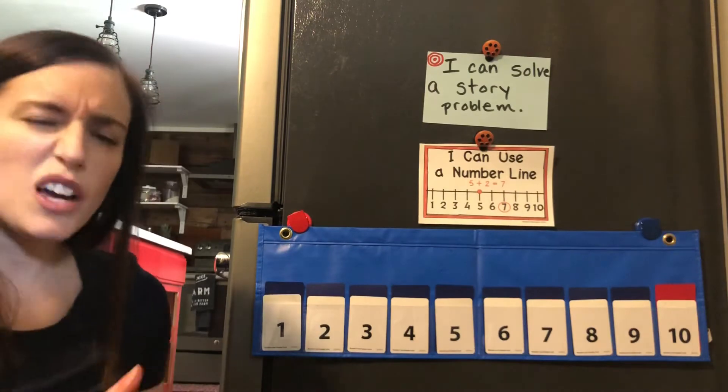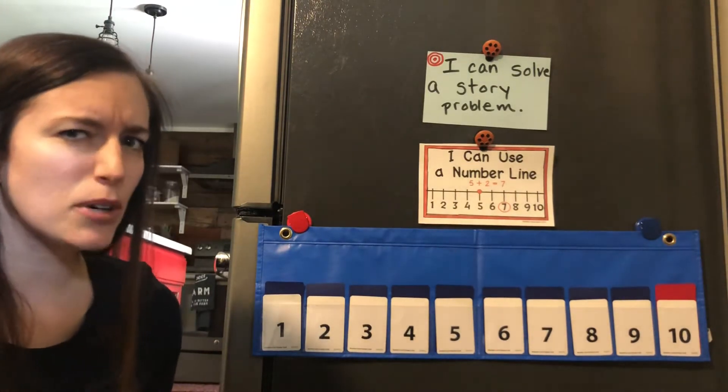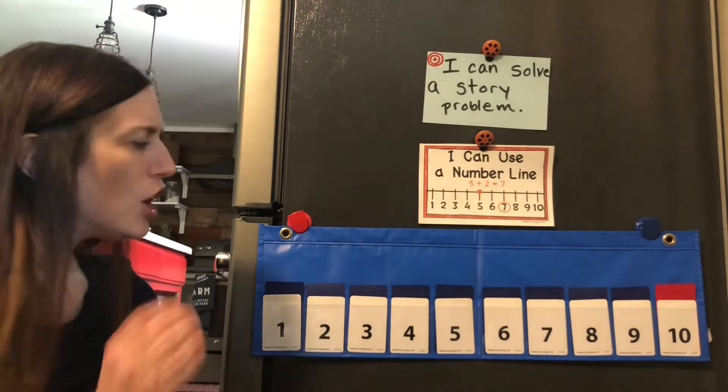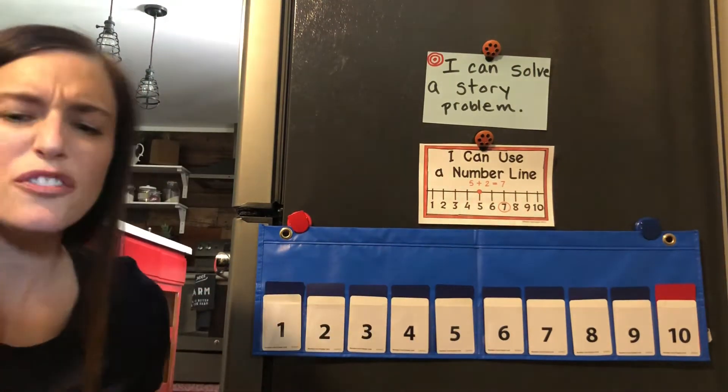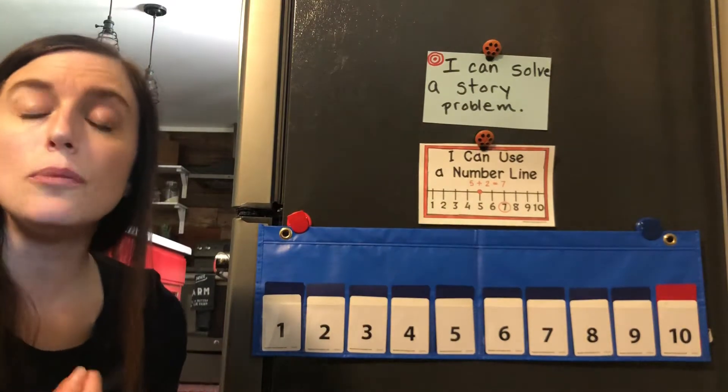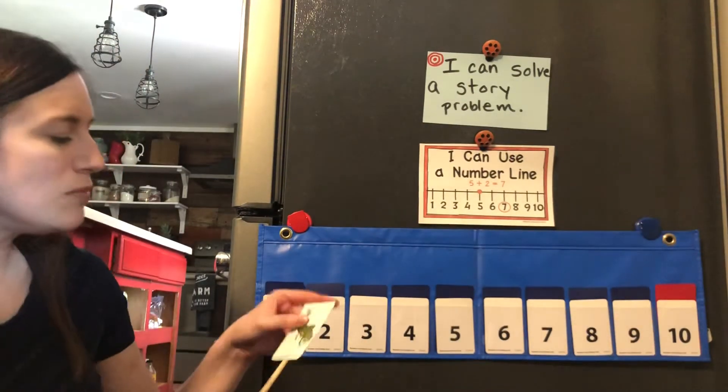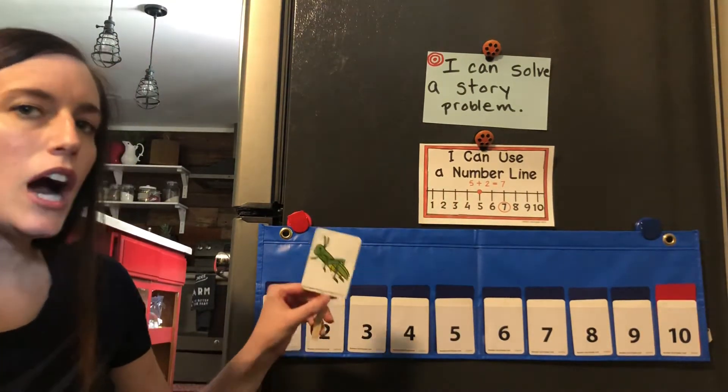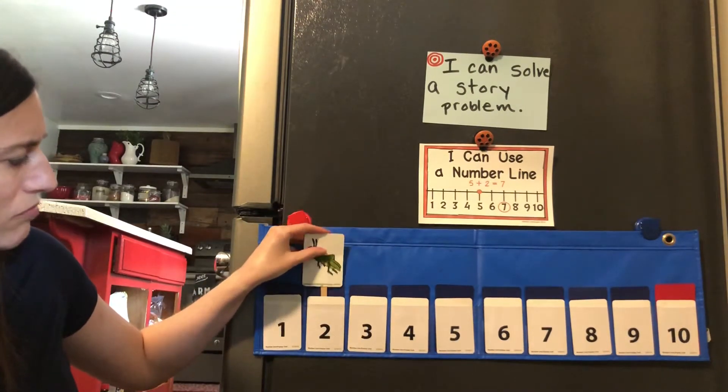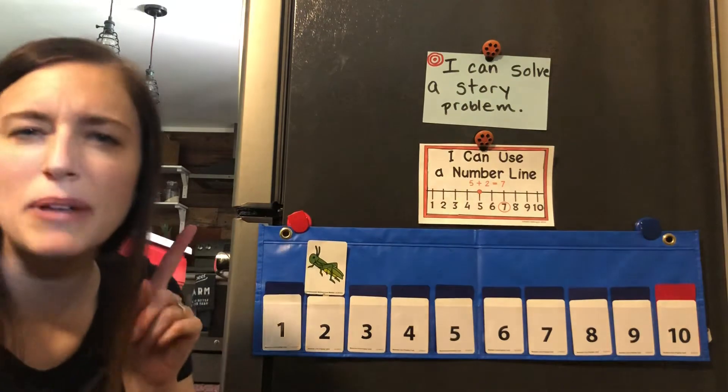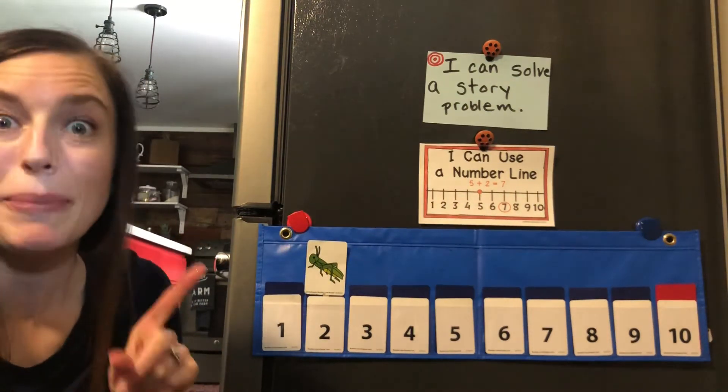Okay, now we haven't ever used a number line to solve a story like this, so I'm going to show you how I do it. So, the first part said Sarah saw two big dogs. So, Hopper, are you ready? I'm going to put Hopper right on the number two. That shows how many big dogs she saw.